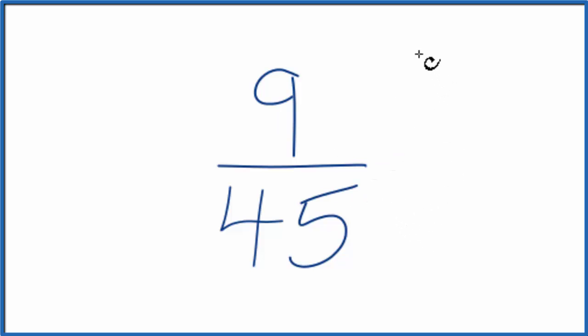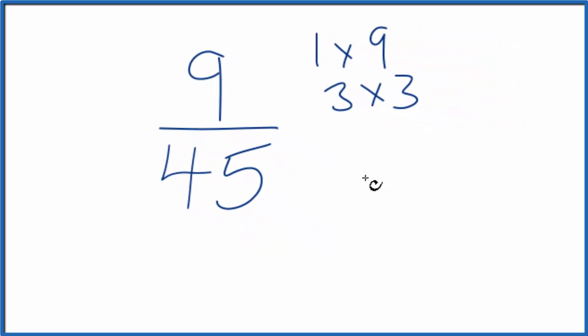If I look at the factors of 9, I have 1 times 9 and 3 times 3, both of those equal 9. For 45, I have 1 times 45, then I have 3 times 15, and 5 times 9.